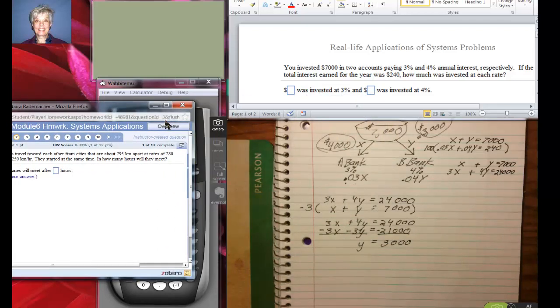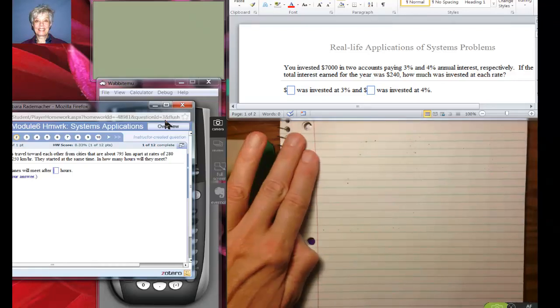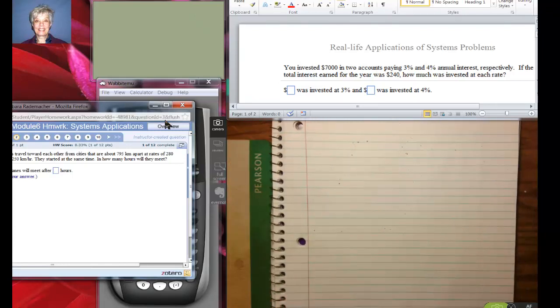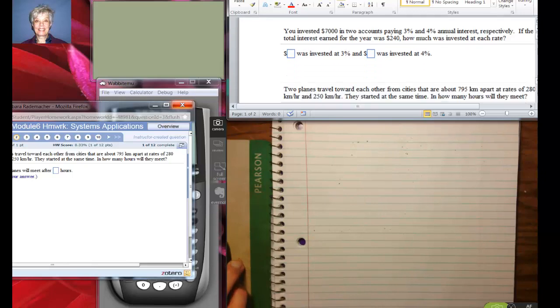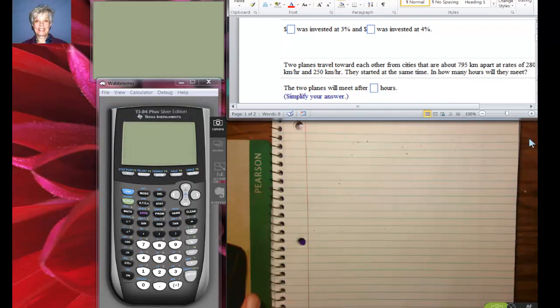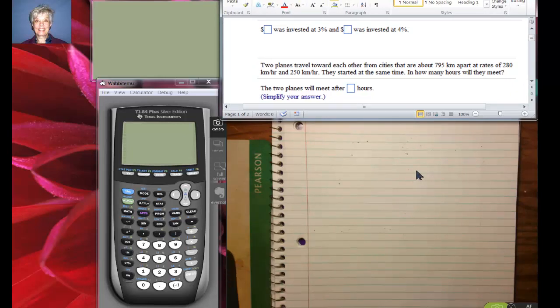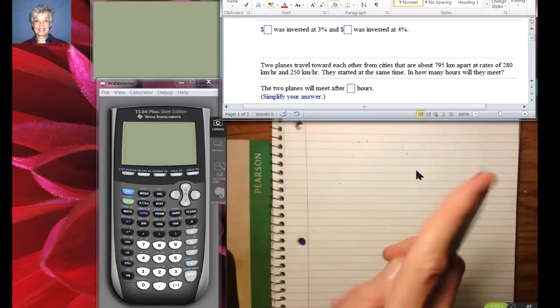We're going to need a new piece of paper for this. Two planes - two planes are traveling toward each other. All right, let's go this way. There we are because the print is bigger and I'm going to put this guy to sleep. All right, two planes. Here, move this over so we could see. Two planes travel toward each other from cities that are 795 kilometers apart at a rate of 280 kilometers per hour and 250 kilometers per hour. So what do we know? We know that there are two cities.